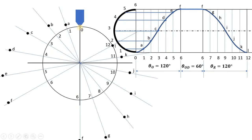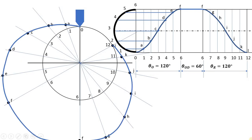Now we draw a smooth curve passing through all these marked points, and that will be our cam profile. As you can see, this is the complete cam profile. From 0 to 6 it is the out stroke, then there is a dwell, followed by the return stroke, and then a dwell period of 60 degrees — completing the full cam profile. In this way we can draw a cam profile for a knife edge follower having simple harmonic motion during both the out stroke and the return stroke. Thank you very much for watching.